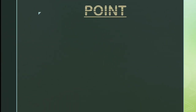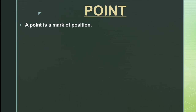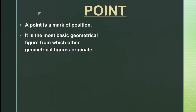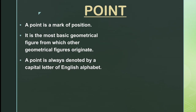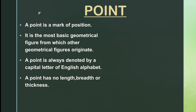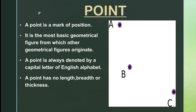Let's know what is a point. A point is a mark of position. A point is the most basic geometrical figure from which other geometrical figures originate. A point is always denoted by a capital letter of the English alphabet. A point has no length, breadth, or thickness. As you can see in the adjoining figure, A, B and C are three points on a plane surface.